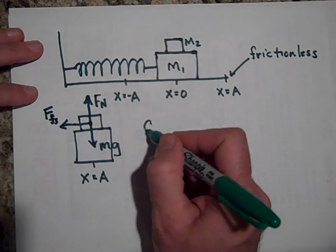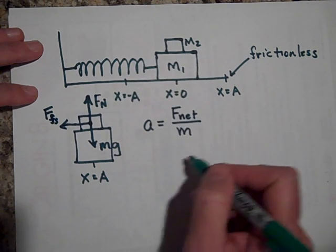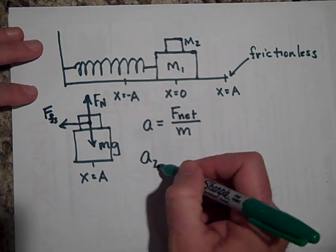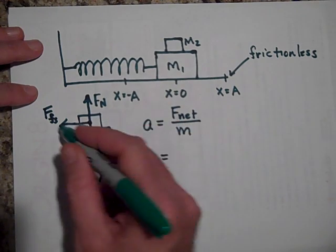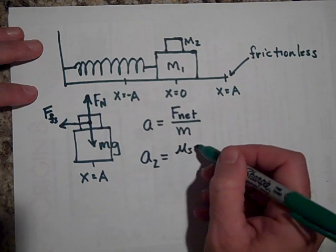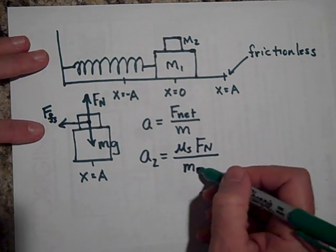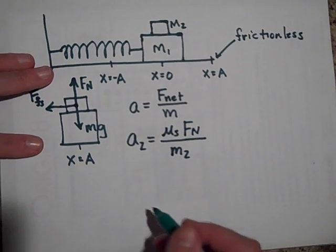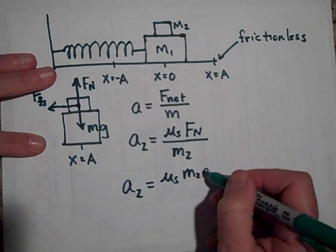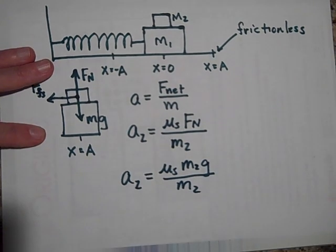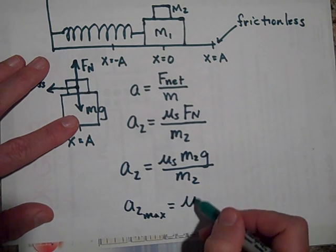I'm going to say that A equals F_net over M, so the acceleration of block 2 will equal the maximum force it can have. The maximum force is when you have the maximum force of friction, which is μs times the normal force divided by M2. Well, the normal force is M2 times g divided by M2, so A2 max is going to be μs times g.